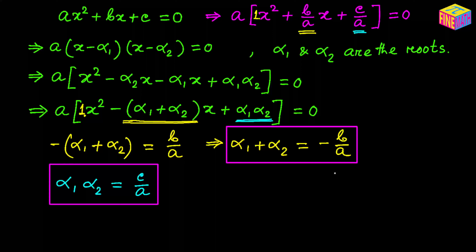Here b is the coefficient of the x term, a is the leading coefficient, and c is the constant term.